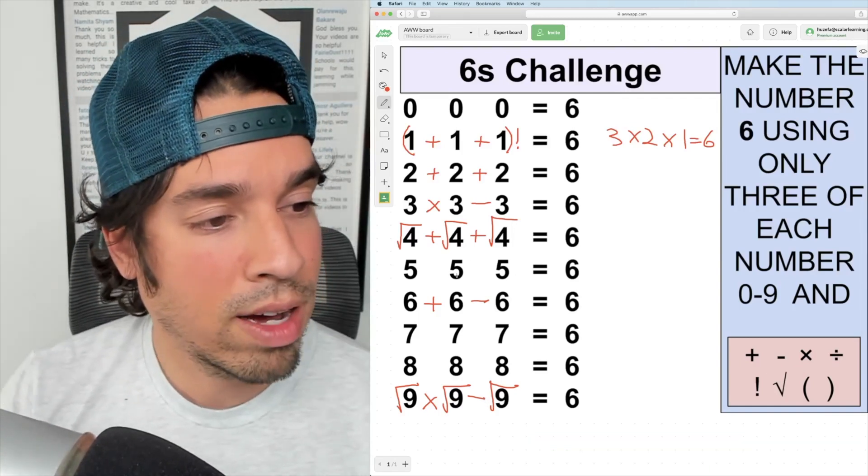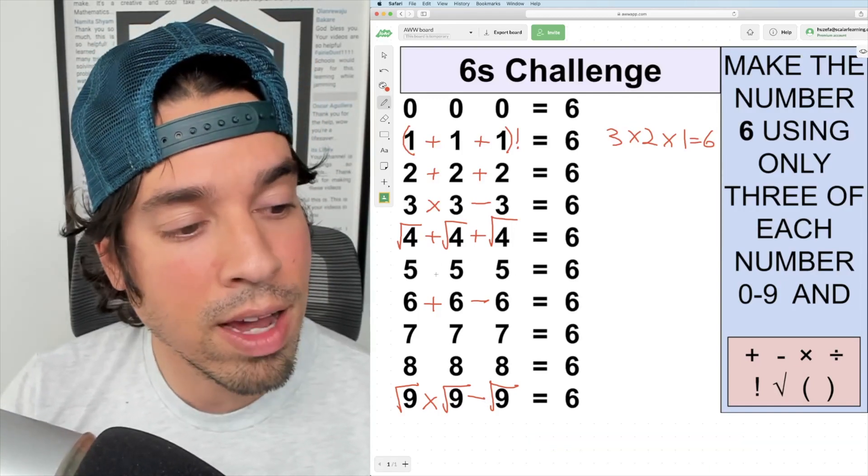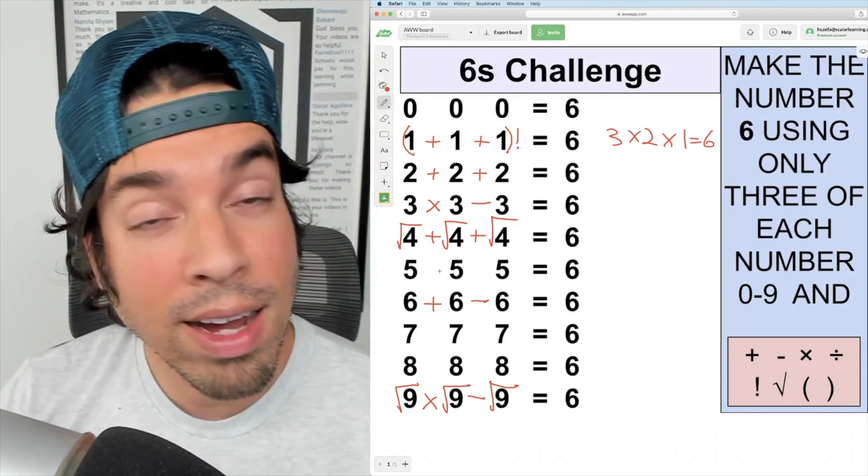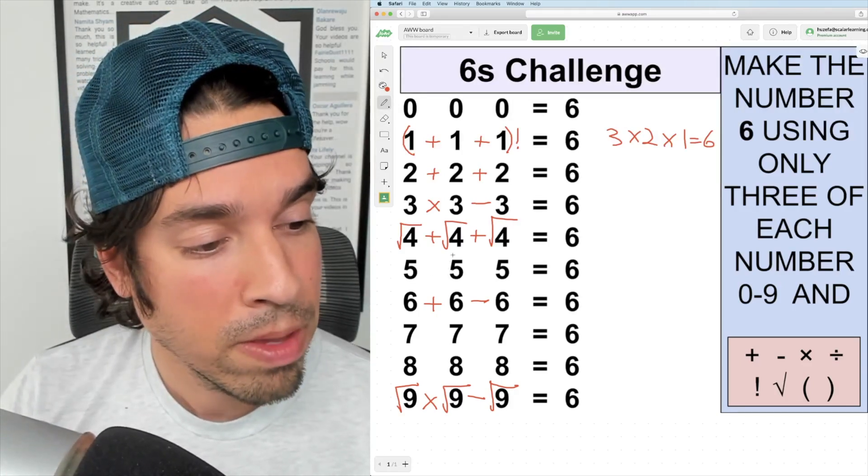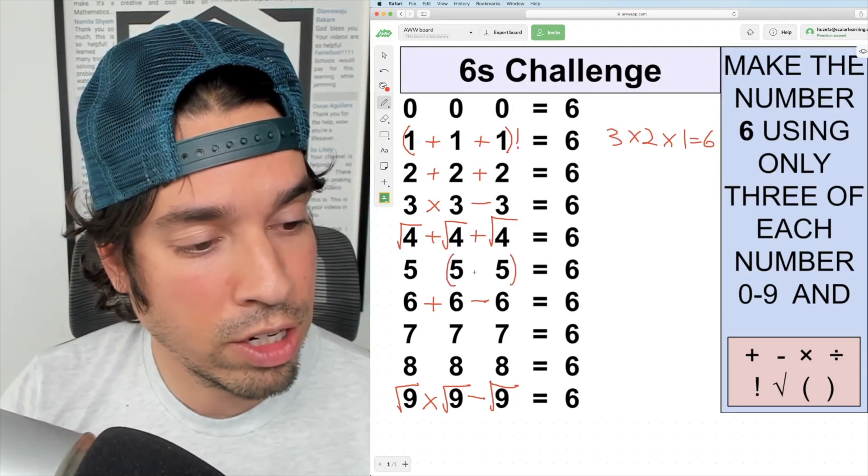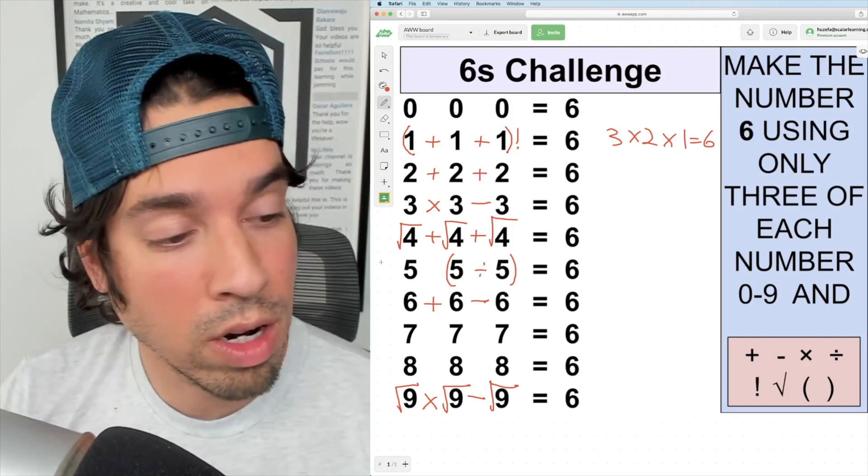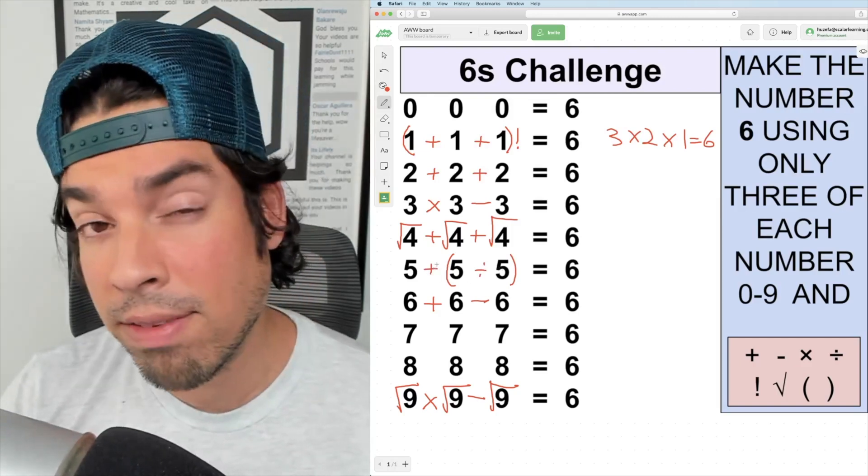Next, let's move on to the five. Five is one away from six. If I take these two fives over here and divide them, that's a one. Now I simply add that to 5 and we're done.